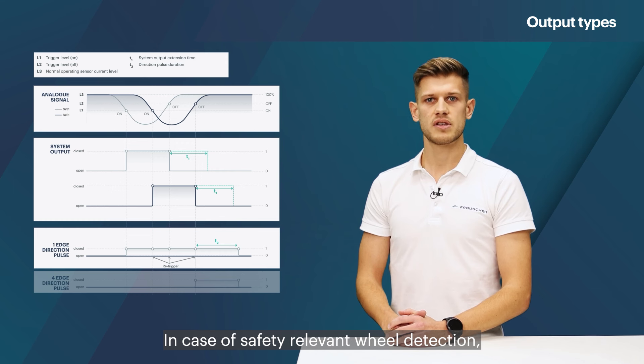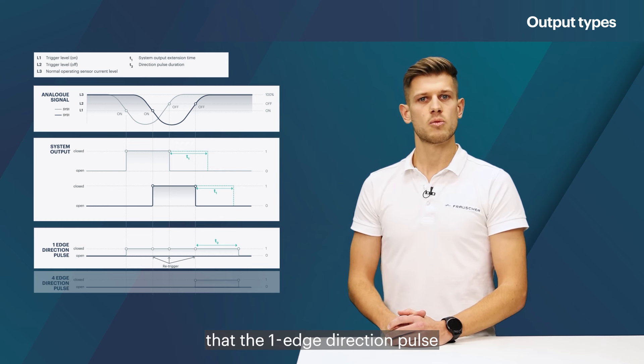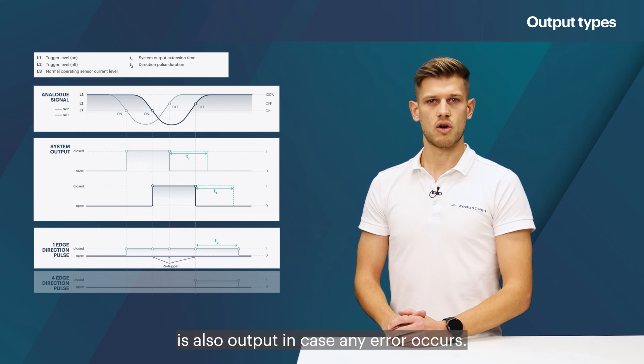In case of safety relevant wheel detection, an important note here is that the one edge direction pulse is also output in case any error occurs.